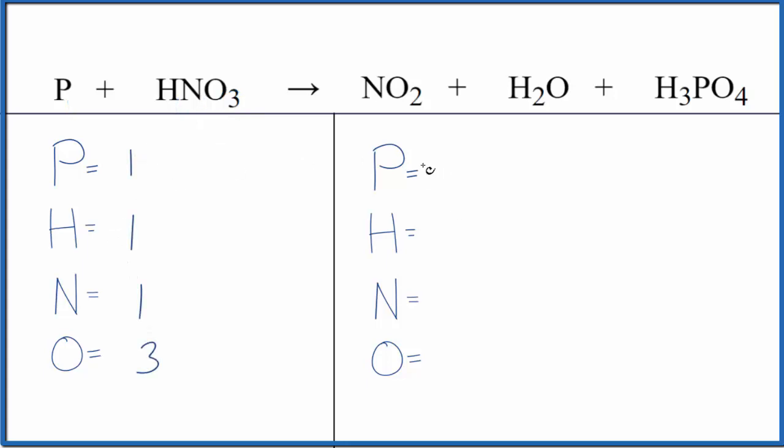On the product side we have to be a little bit more careful. Phosphorus we have the one, hydrogens we have two plus the three here. So we have a total of five hydrogen atoms. Nitrogens just the one here and then oxygen two plus one plus four. So seven total oxygen atoms.